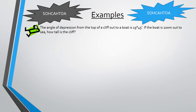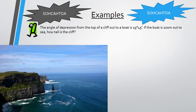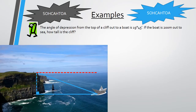Let's look at Example 1. The angle of depression from the top of a cliff out to a boat is 19 degrees 45 minutes. If the boat is 200 meters out to sea, how tall is the cliff? We draw a picture of a cliff and a boat and form a triangle with the height of the cliff and the distance out to the boat. We include a red horizontal line because it says angle of depression — from the horizontal down — so 19 degrees 45 minutes takes that position. The boat is 200 meters out to sea, and the height of the cliff is our x.